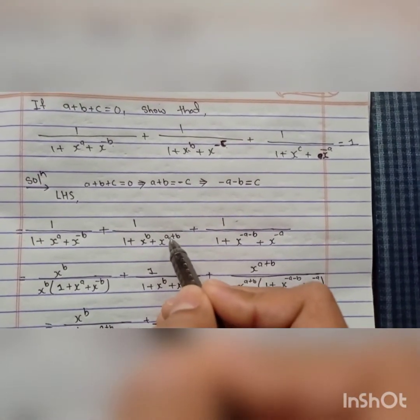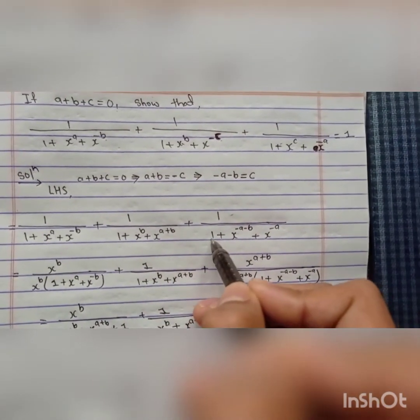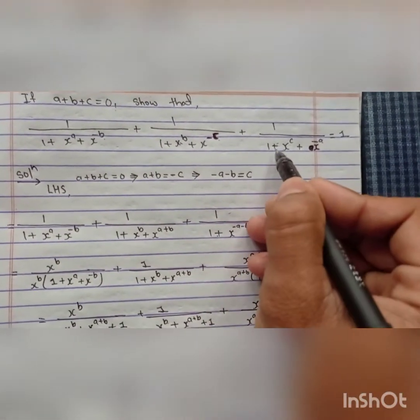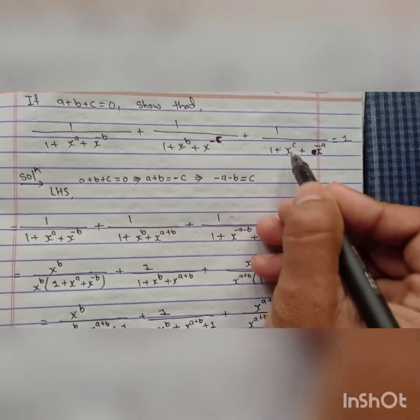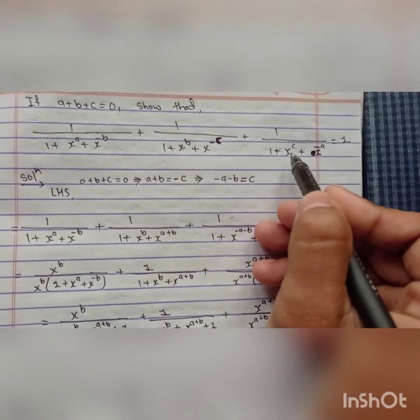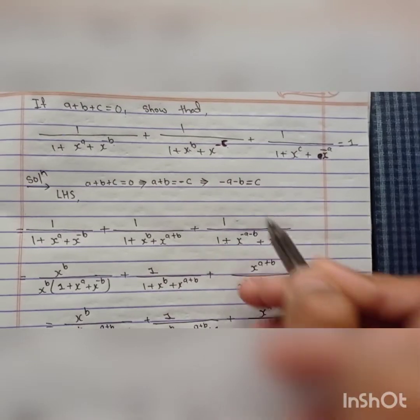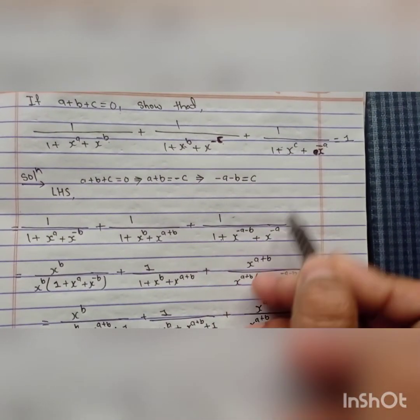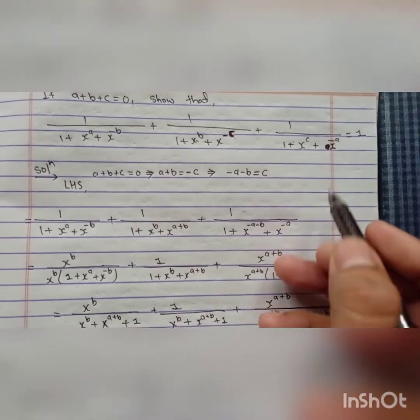So here I have written x to the power a plus b. And here, 1 upon 1 plus x to the power c, but c is to be replaced in form of a and b. So c equals minus a minus b, and plus x to the power minus a.